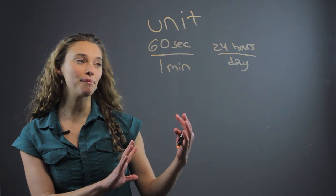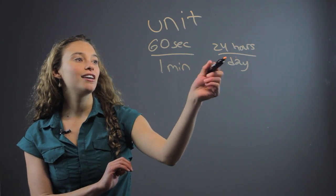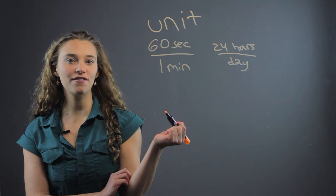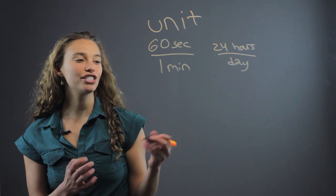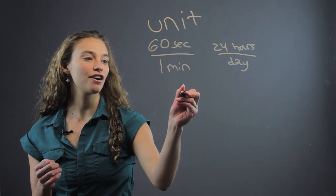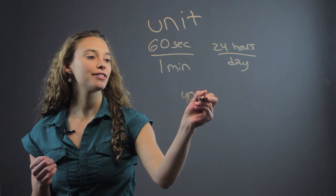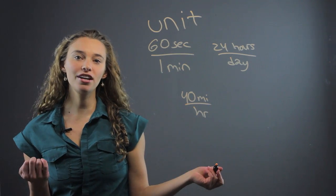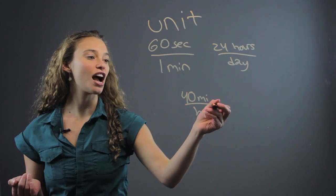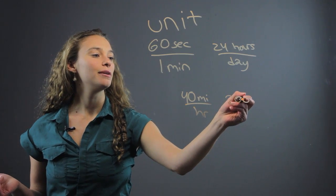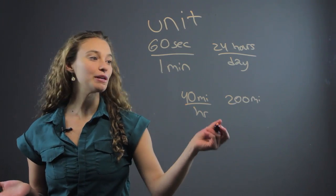So we use these in a word problem to do a conversion. So let me give you an example. Let's say that Jessica is driving 40 miles per hour, and you want to know how long it's going to take her to drive 200 miles. That's the word problem.